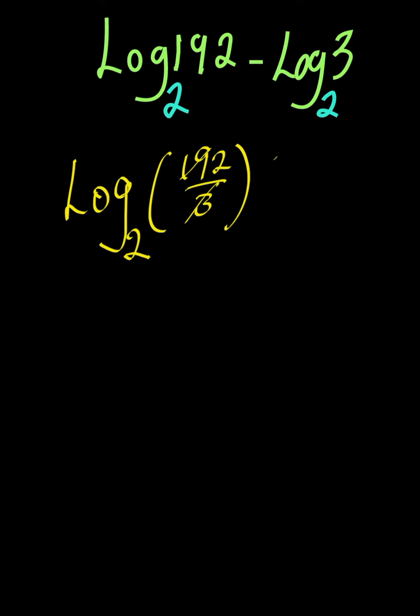Now 192 divided by 3 is 64. So we are having this as the logarithm of 64 to a base of 2.